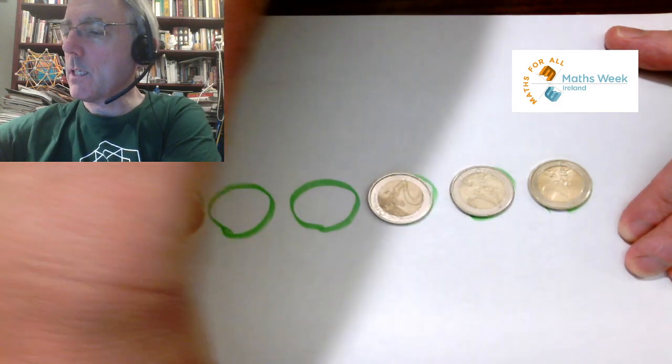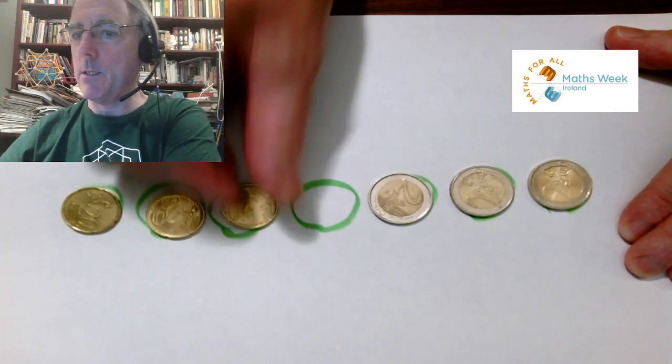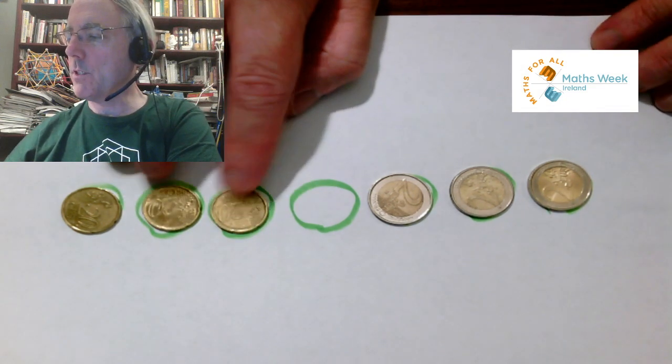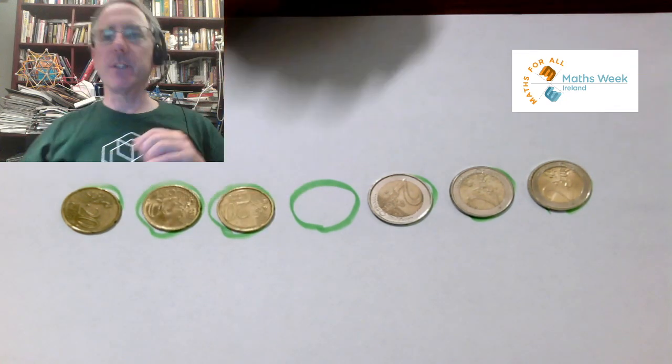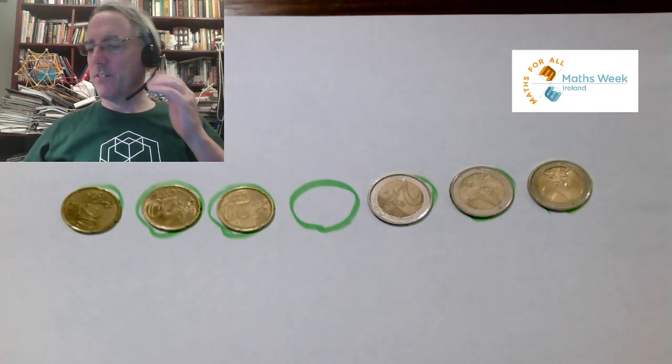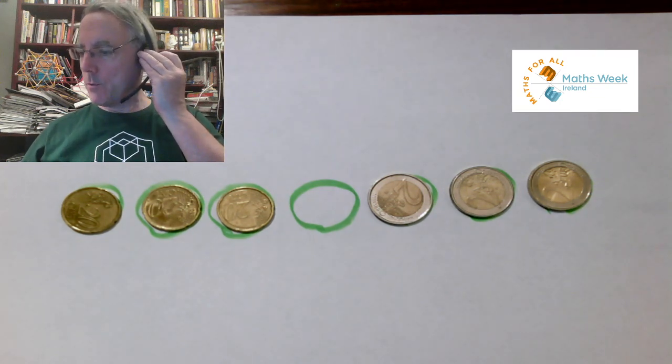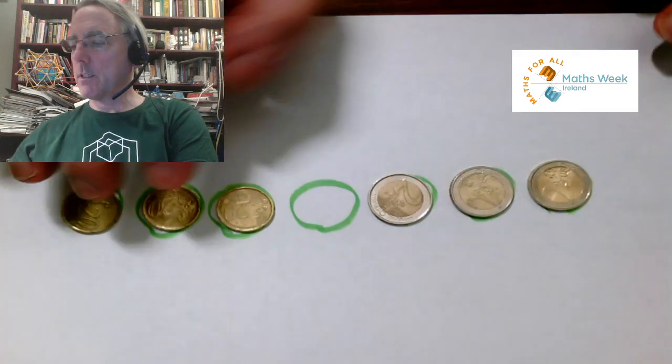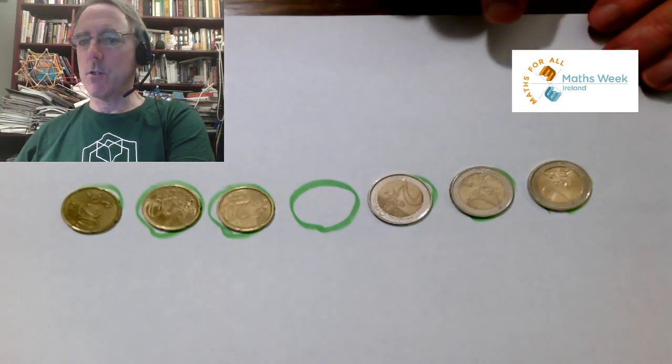So it's a good start to any problem to draw a picture, and we can go one step further if we can make a physical model of it - it can often be easier to manage. Okay, so here we have three frogs and three frogs, and they want to change position.